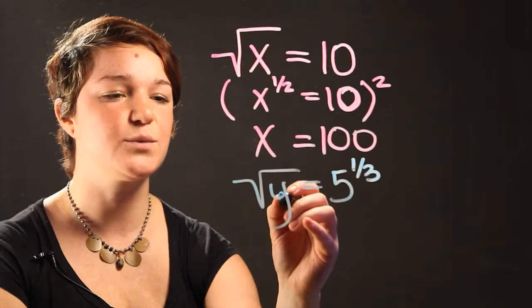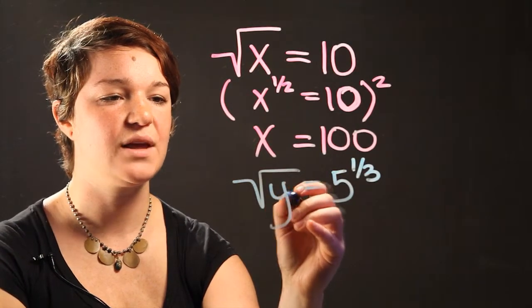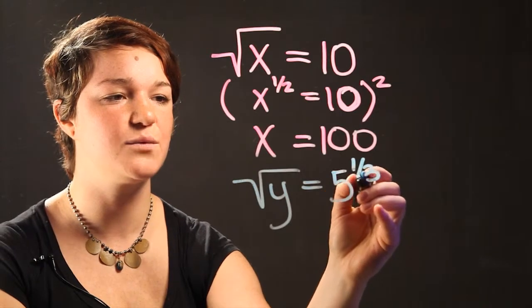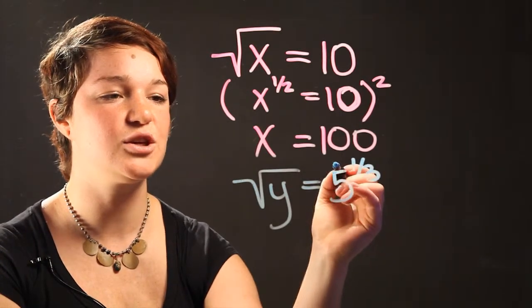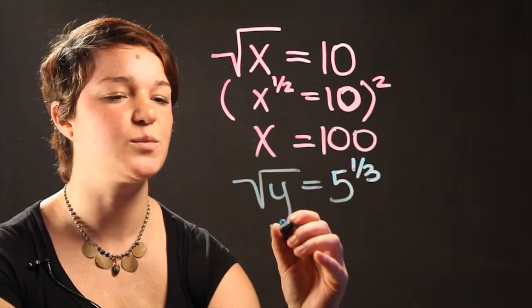Well it means that we're taking the square root of y, or it's y to the 1 half power, and it's equal to 5 to the 1 third power, or it's the same as saying the cubic root of 5. So let's write it down in a way that's more comprehensive.